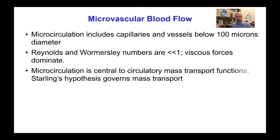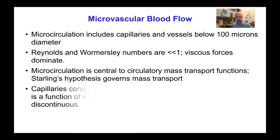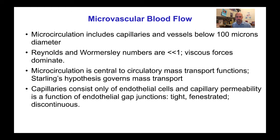The microcirculation is important for circulatory mass transport functions, and Starling's hypothesis governs the mass transport. Capillaries consist of only endothelial cells and capillary permeability is a function of the endothelial gap junctions, some of which are tight and others are fenestrated or discontinuous.